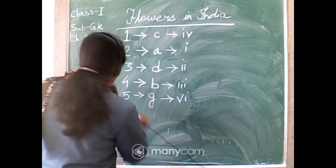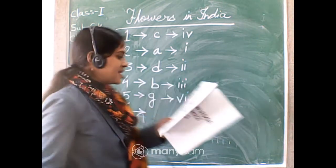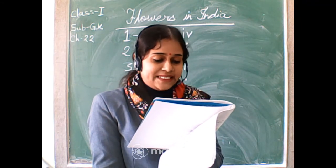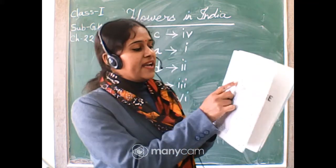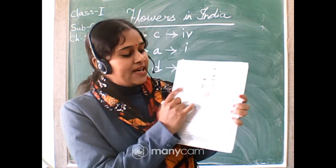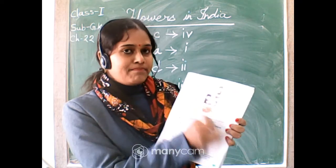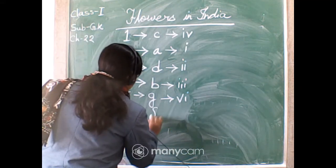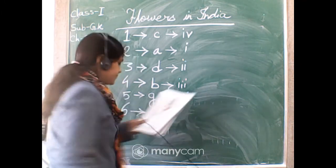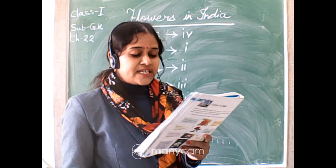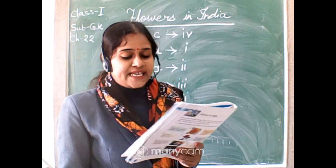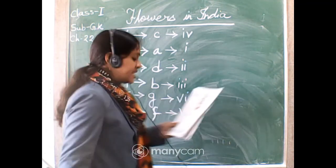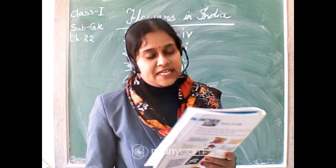Number six: Frangipani is a pretty white flower with five white petals and a little yellow near the middle. Number six joins picture F. It has a strong scent and large petals.